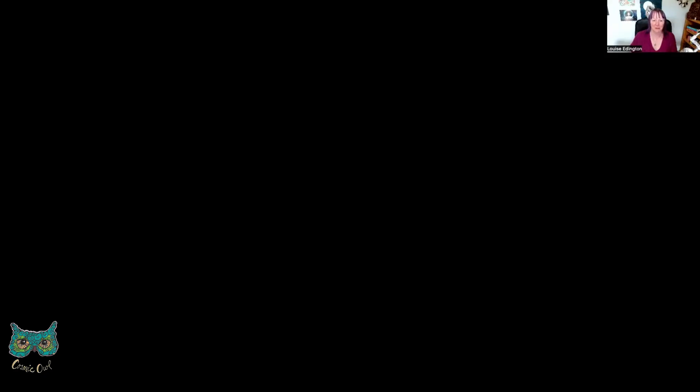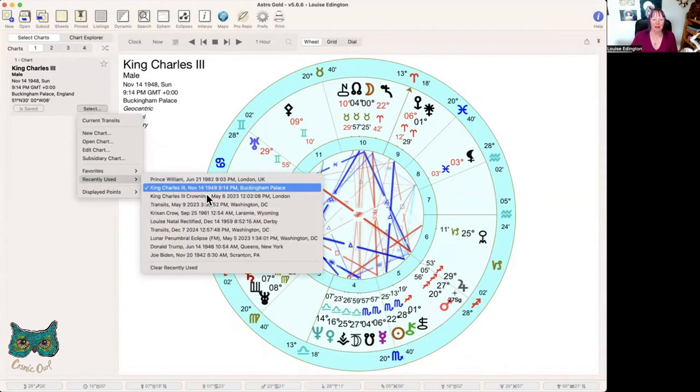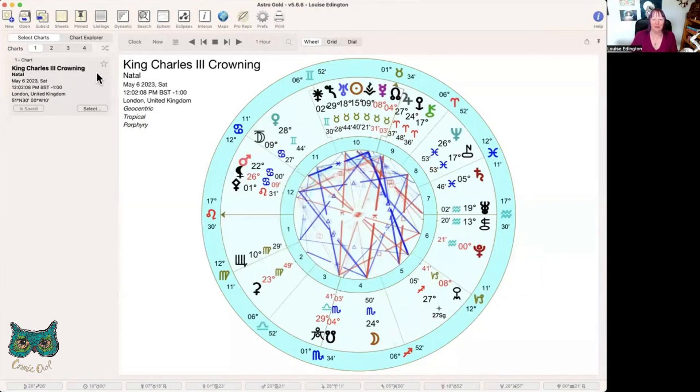First I'm going to look at the actual coronation chart, the day of the coronation. Many astrologers are asking why on earth with Mercury retrograde and under an eclipse.